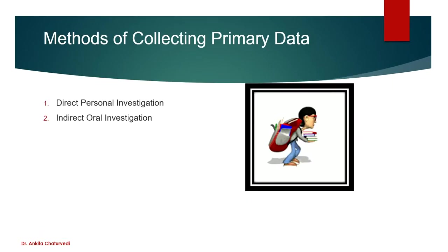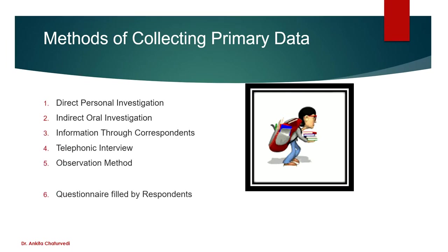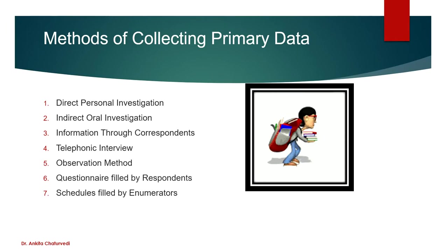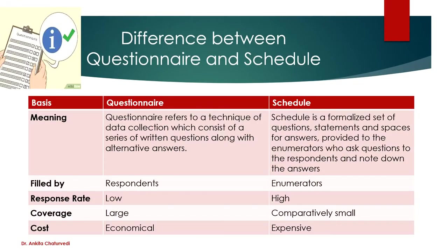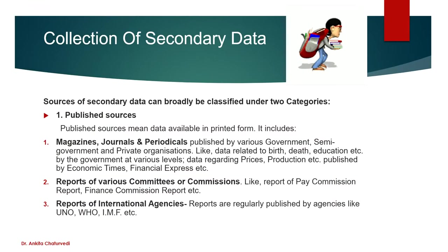We discussed methods of collecting primary data: direct personal investigation, indirect oral investigation, information through correspondence, telephoning interview, observation method, questionnaire filled by the respondents, and schedule filled by the enumerators. The main difference is that questionnaires are filled in by the respondents and schedules are filled in by the enumerators.